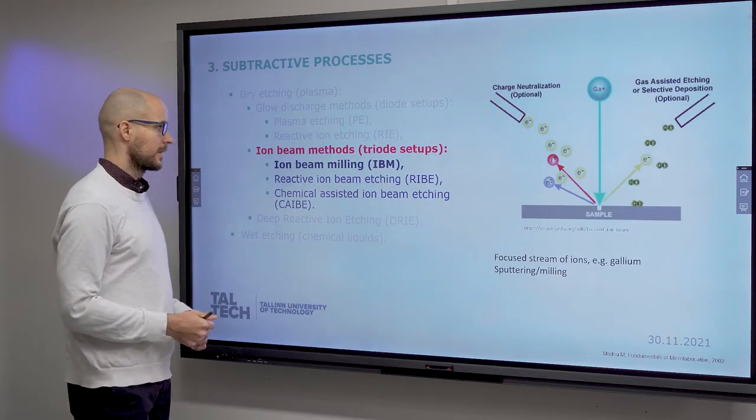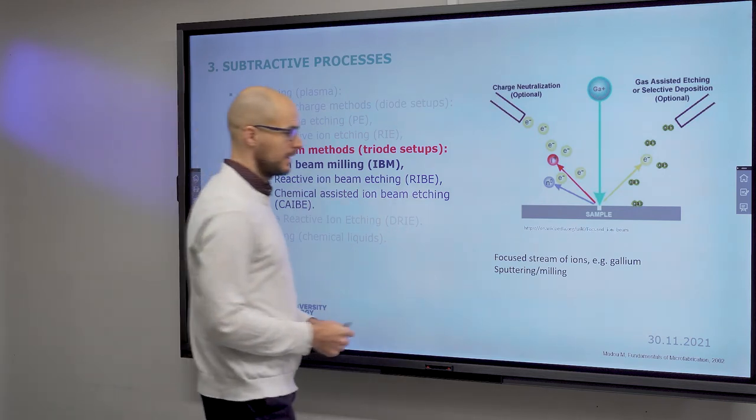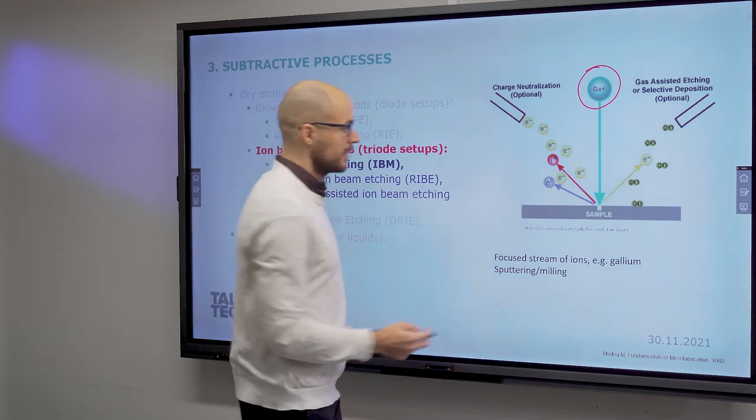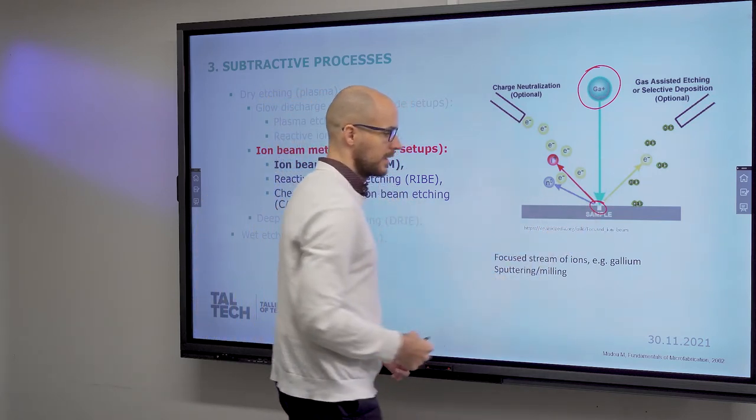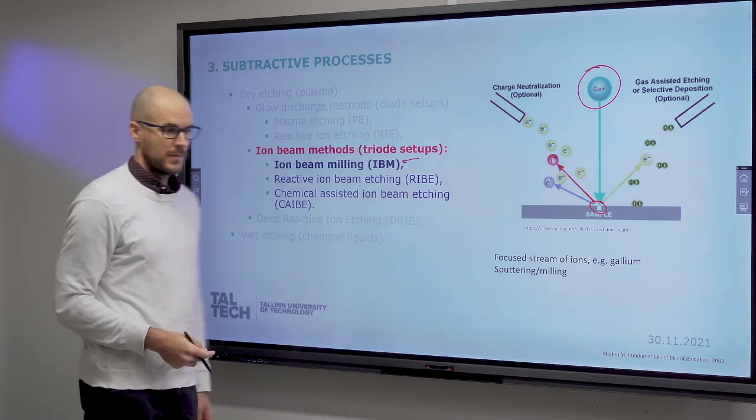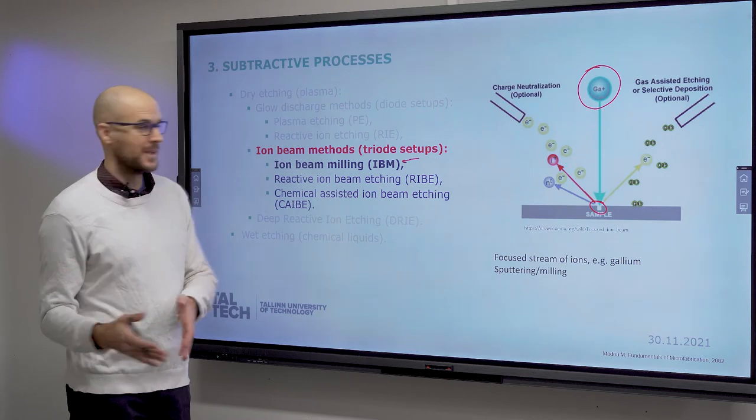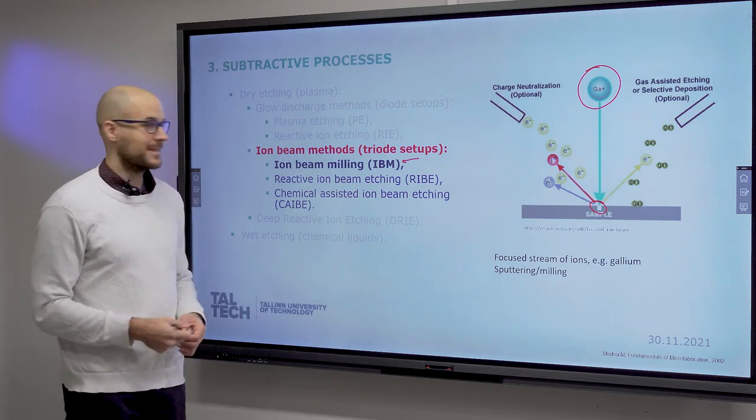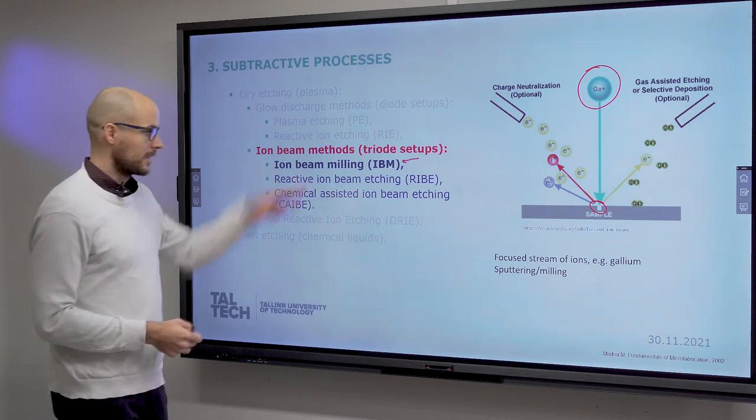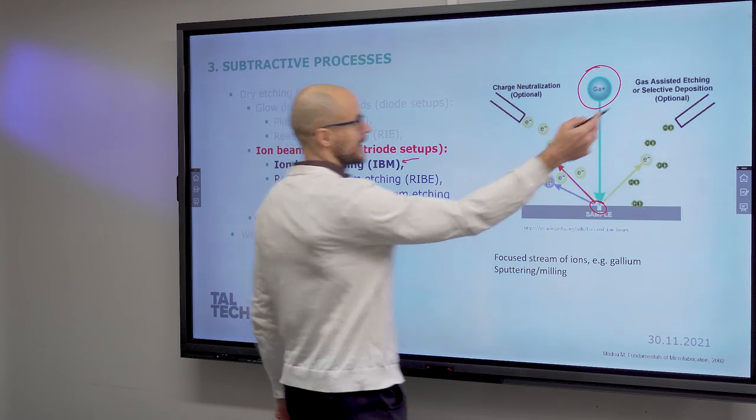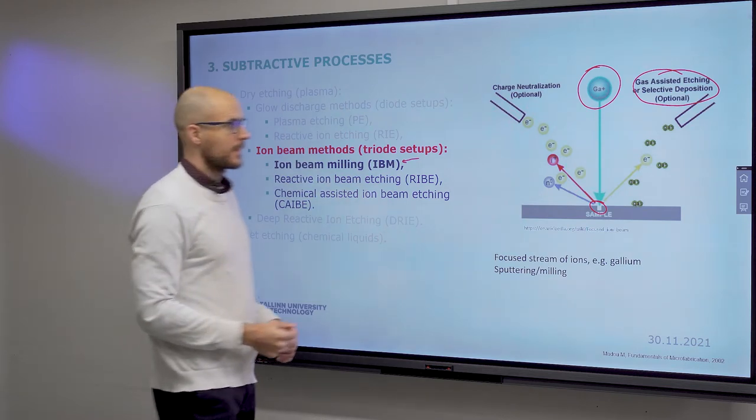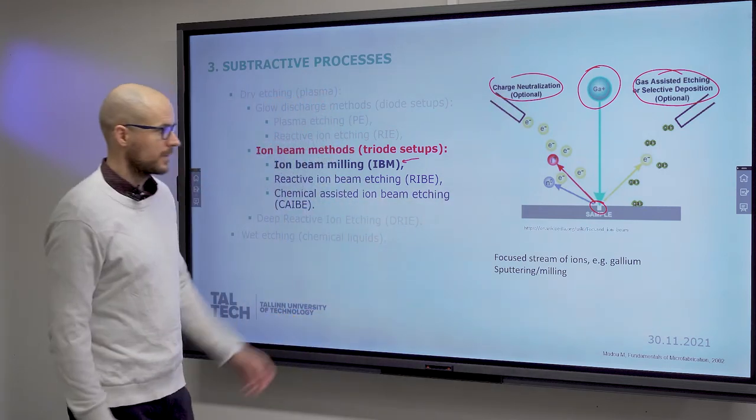Another way is with ion beams. In the case of ion beams, you have a focused stream of ions, such as gallium, which attacks your sample and etches into it in a specific spot. It can be used for ion beam milling. Instead of having a drill, you have a particle stream that bombards your surface and eats away from it. This way you can make very high resolution structures. With additional gases, you can speed up the etching process, and you need to neutralize the charges.